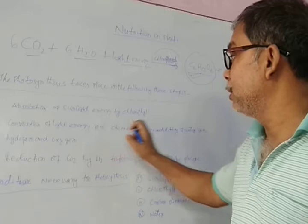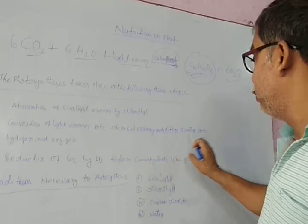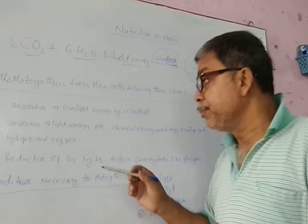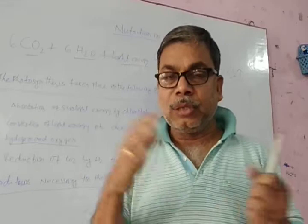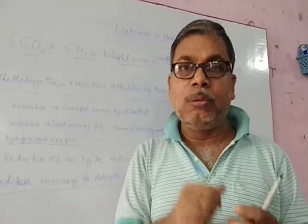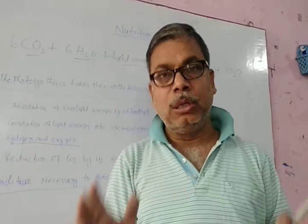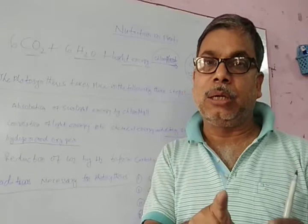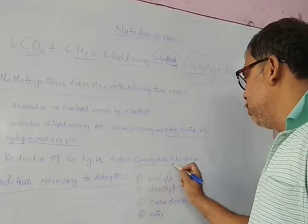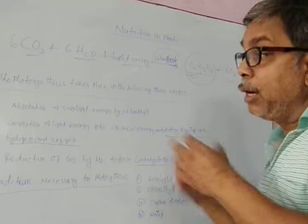There is conversion of light energy into chemical energy, and splitting of water into hydrogen and oxygen. The water in the leaves breaks down into hydrogen and oxygen. The hydrogen is then used to reduce carbon dioxide, and carbon dioxide is converted into glucose — this is how the plant produces its own food.